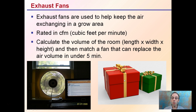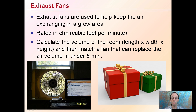Exhaust fans are used to keep air exchanging in a grow area. They're rated in CFM, which stands for cubic feet per minute. Calculate the volume of the room — length, width, and height — to get the volume, then match it to a fan that can replace the air volume in under five minutes. Some growers may shoot for one minute, but under five minutes is the key. You want the fan exhausting air out, pulling air from the room, rather than blowing it in your face. Match the fan to the volume of your specific grow space.